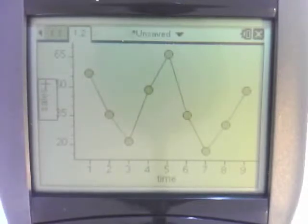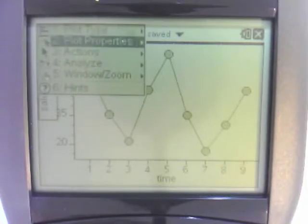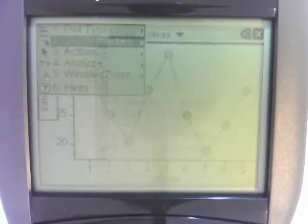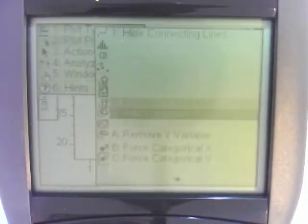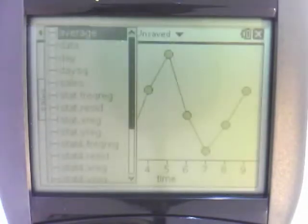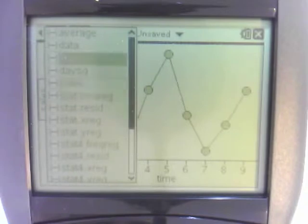So to do that, we can add a Y variable. So we go menu, and we go down to plot properties number 2, and we add a Y variable. And so we want to add... Oh, average, there it is, right at the top. So I remember what I called it.